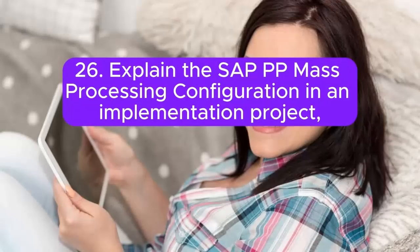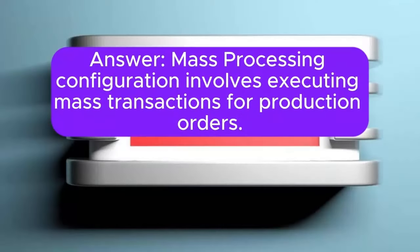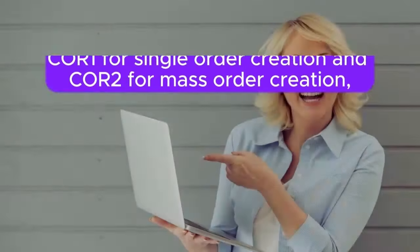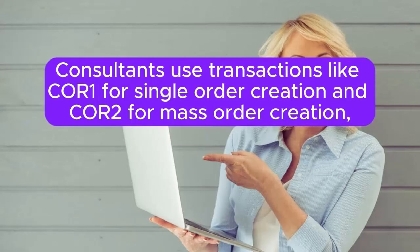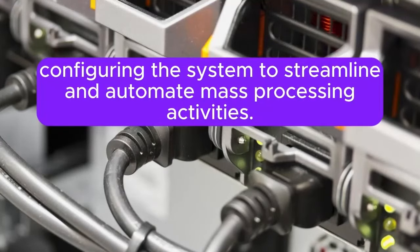Question 26: Explain the SAP PP mass processing configuration in an implementation project. How do you set up the system to execute mass transactions for production orders? Mass processing configuration involves executing mass transactions for production orders. Consultants use transactions like CO01 for single order creation and CO02 for mass order creation, configuring the system to streamline and automate mass processing activities.